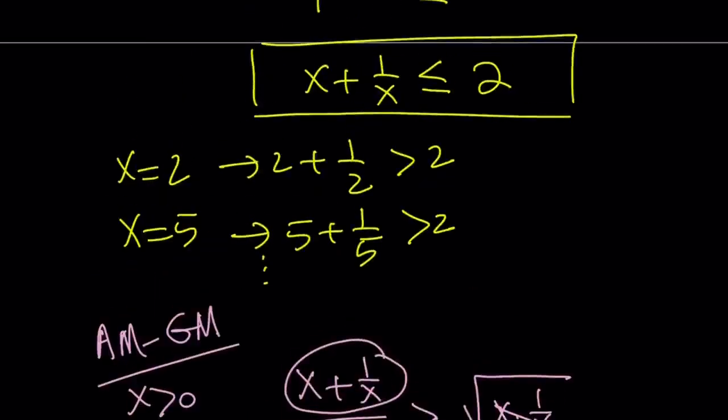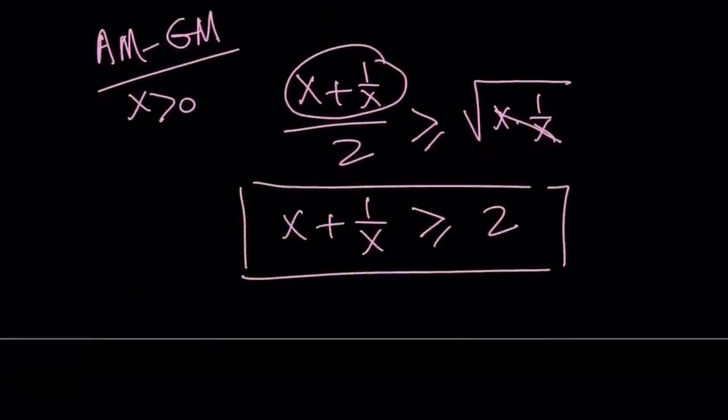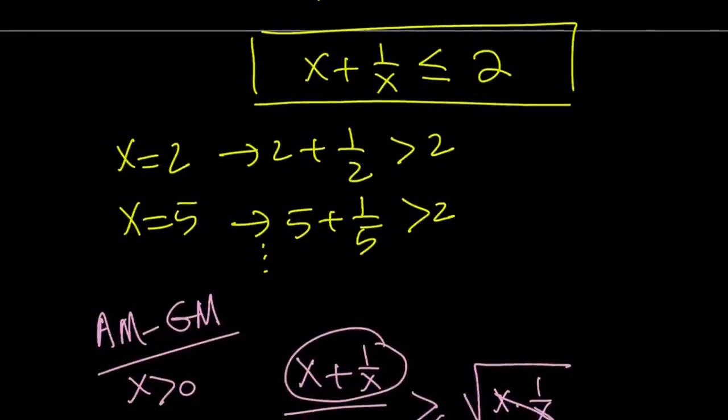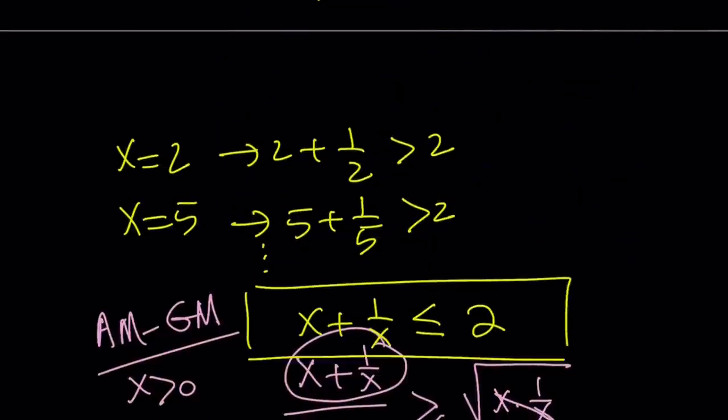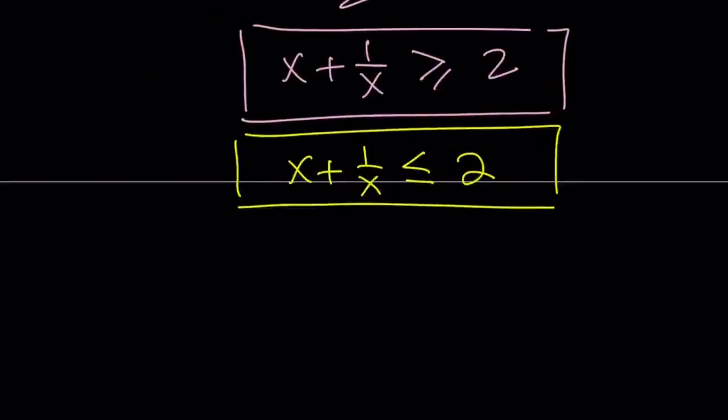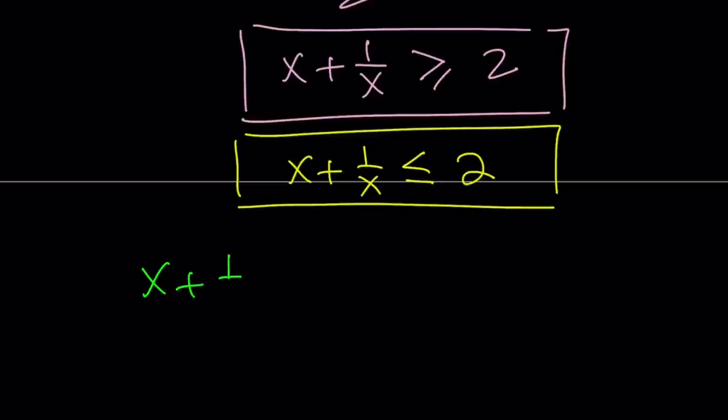One inequality says x plus 1 over x is less than or equal to 2. The other inequality says x plus 1 over x is greater than or equal to 2. So if you put these two inequalities together, let me go ahead and use the same color that I used. Actually, I could go ahead and probably just be lazy and move this to the bottom. And we can go ahead and compare them like this. Notice that these two don't contradict each other, but the only intersection point is x plus 1 over x equals 2.